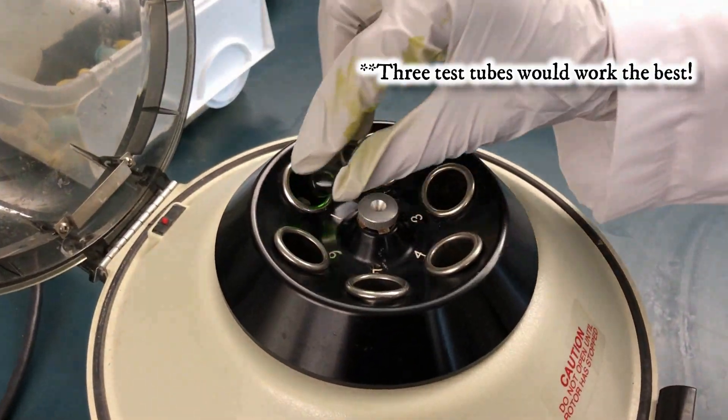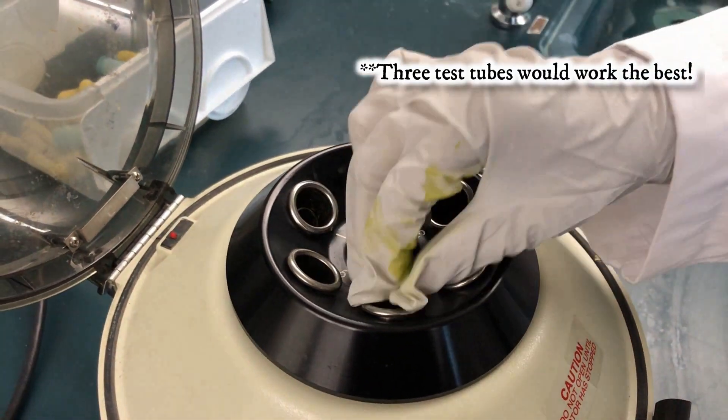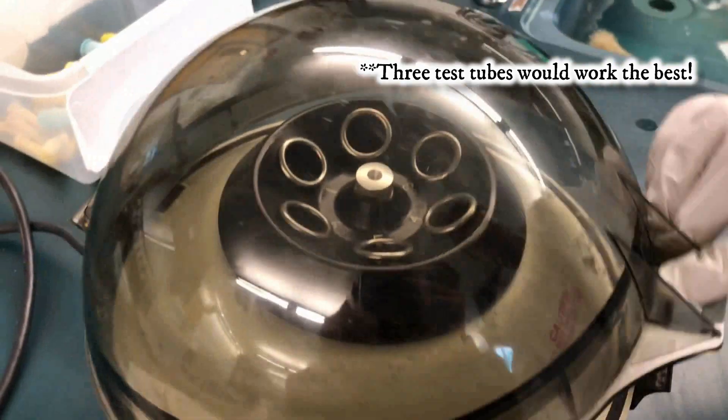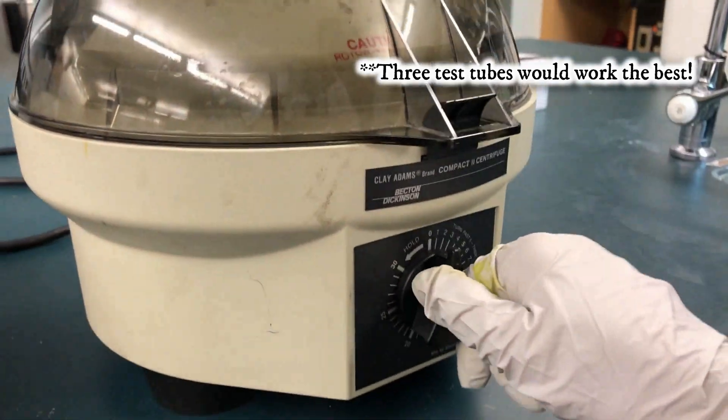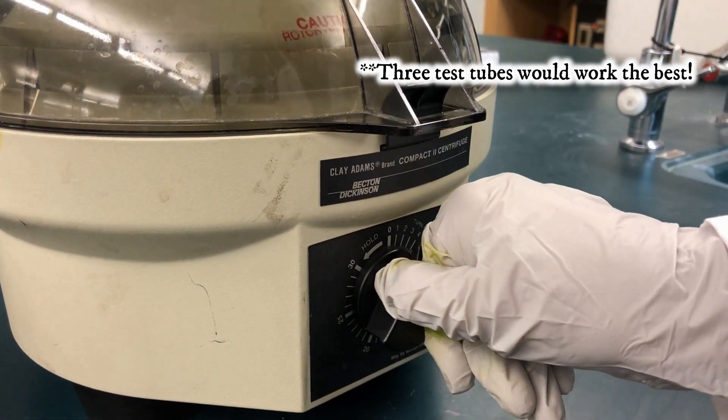Next, centrifuge for about 1 minute to separate the layers. Remember to balance the centrifuge with another test tube of equal mass or volume opposite of your test tube.